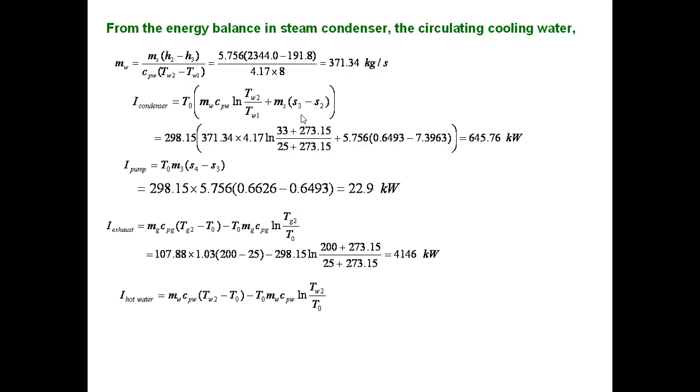Similarly, the hot water coming from the condenser also has some associated exergy. The exergy loss is called the irreversibility of hot water: Mw·CpW·(Tw2 minus T0) minus T0·Mw·CpW·log(Tw2/T0). That is equal to 163.28 kilowatts.